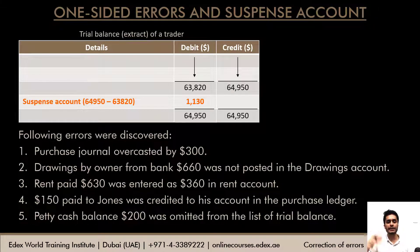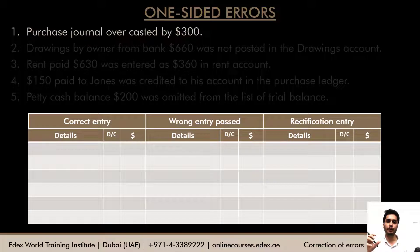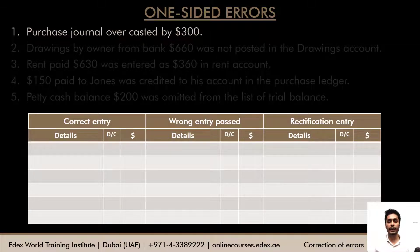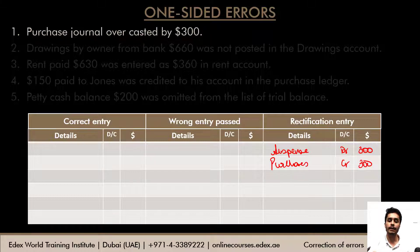The following errors were discovered. First: the purchase journal was overcasted by $300. Since the purchase journal total is debited to the purchases account, purchases was extra-debited by $300. To rectify: credit purchases $300. The other side of the rectification entry goes to the suspense account: debit suspense $300. You must always analyze whether the account is a debit or credit account — not just assume based on the term overcasted.